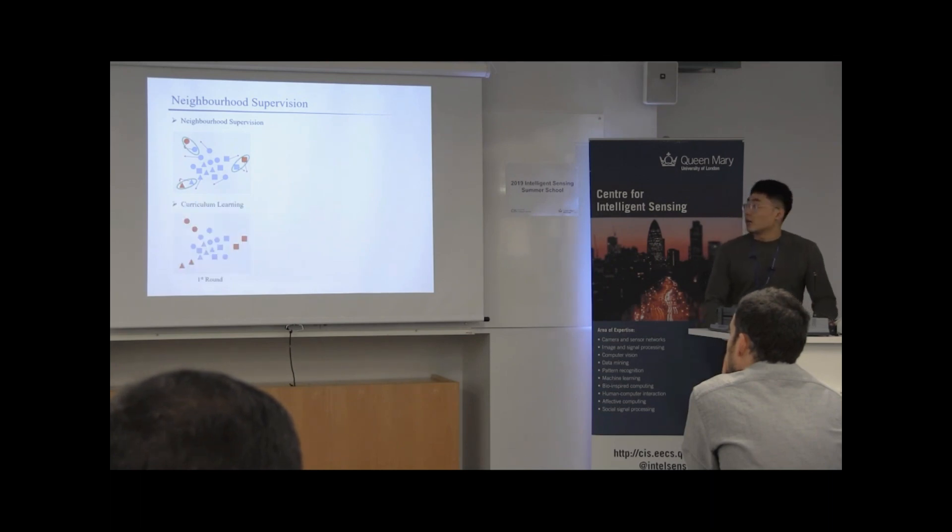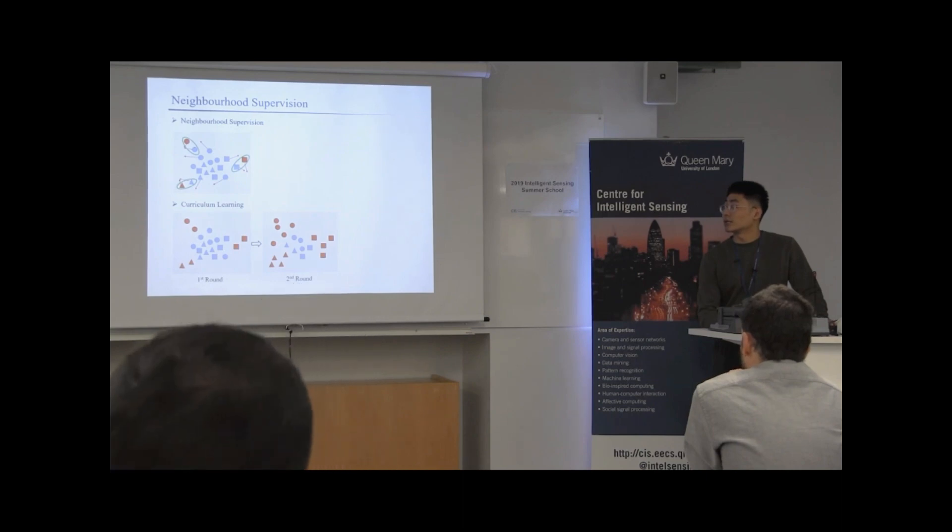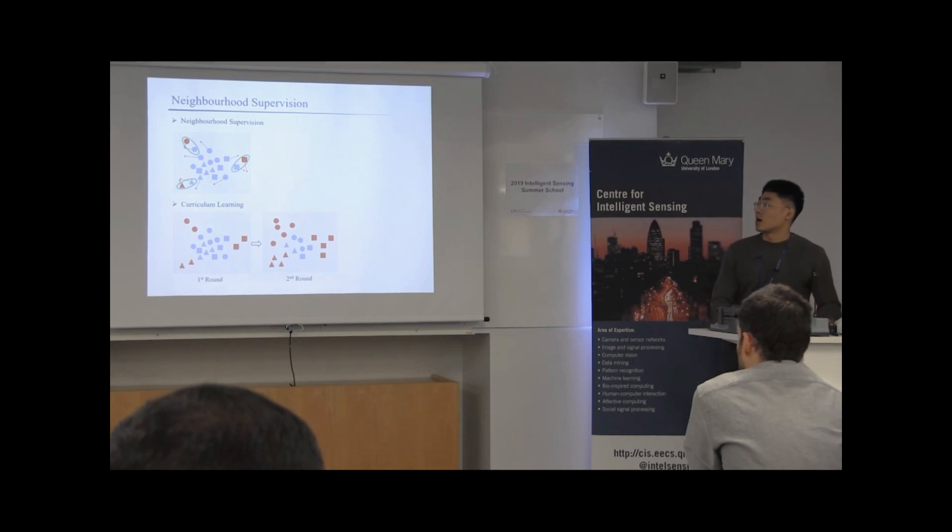And lastly, we train our model in a curriculum learning-like manner, which is to divide the whole training process into several rounds, because it is natural that the amount of consistent neighborhoods should be limited when the model has not been well trained. And along with the improvement of features quality, it will gradually increase. So we divide the whole training process into several rounds and increase the proportion of selected neighborhoods in each round, in order to take advantage of as much neighborhood information to train the CNN model along with the improvement of features quality.